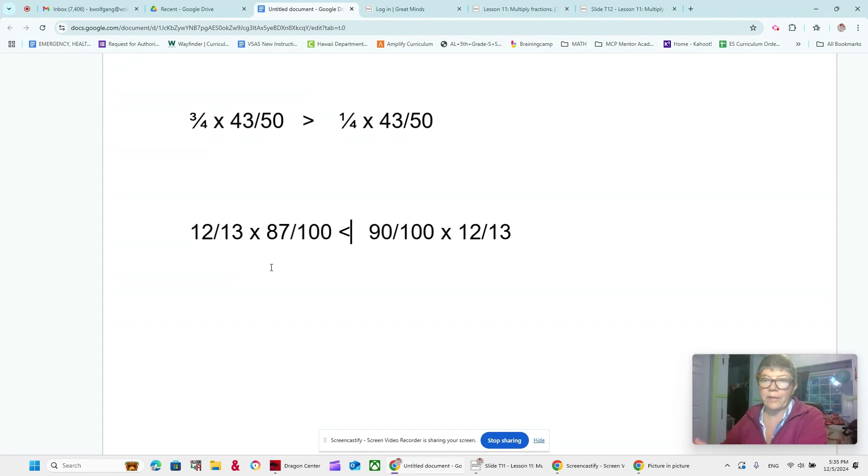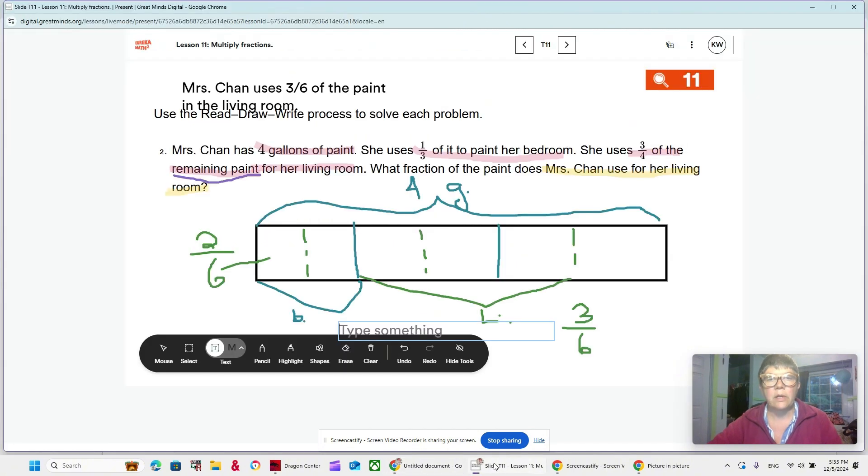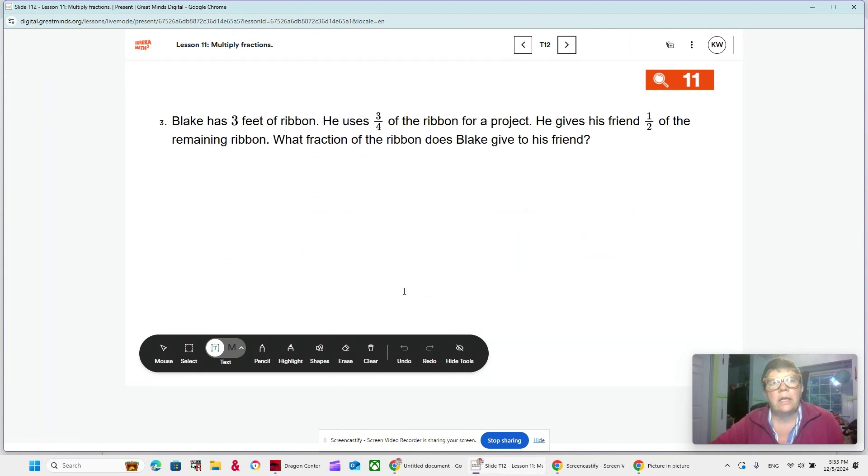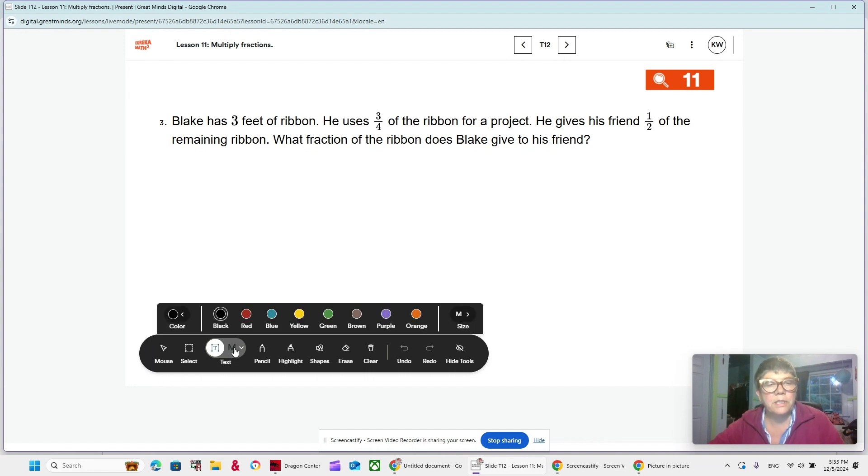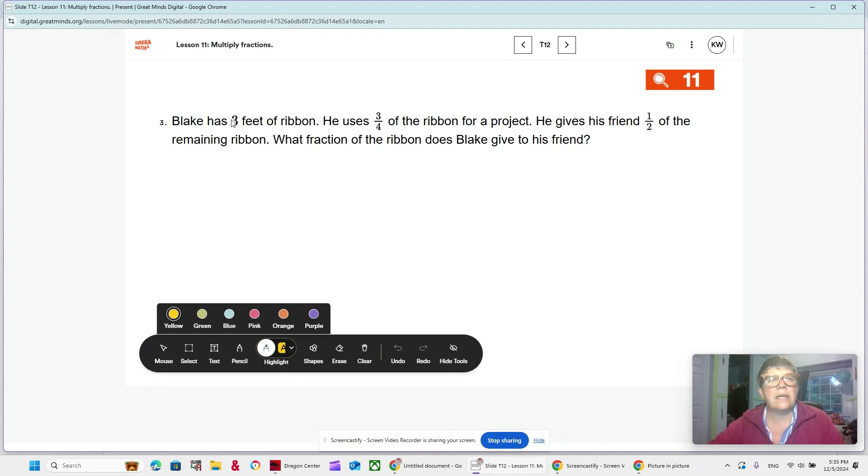Okay, I just wanted to make sure we went over that, and now we're going to jump back to number three in your book, which is about Blake, and there's only going to be two videos in this lesson because we are getting through them nicely. So, here's our last problem. Blake has three feet of ribbon, and we're going to think about what's important, and we're going to highlight or underline.